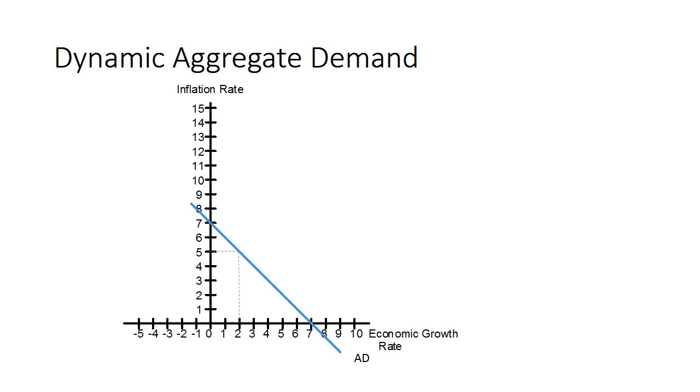But what if we change the rate of spending growth? Suppose, for example, that the central bank decides to print money more slowly. Maybe it grows money supply at a rate of 4% instead of 7%. What happens?